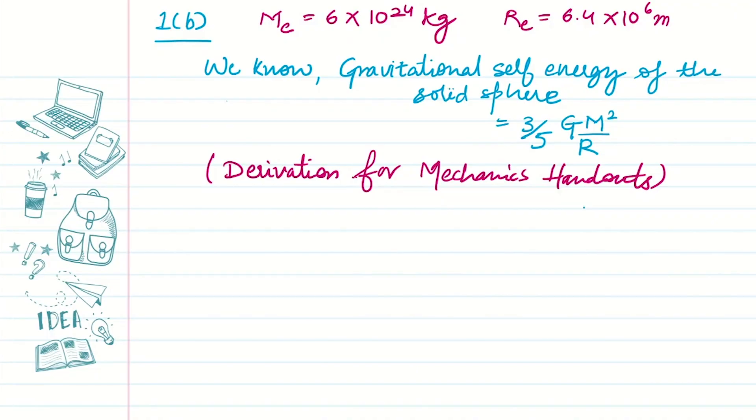Now we have to put the values. Here our solid sphere is Earth. So gravitational constant is 6.67 into 10 raised to power minus 11. Mass square is 6 into 10 raised to power 24 whole square, over radius that is 6.4 into 10 raised to power 6. So after solving this, we will get the value as 2.25 into 10 raised to power 32 Joules.